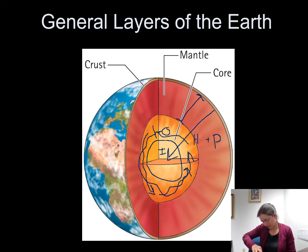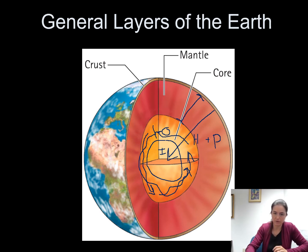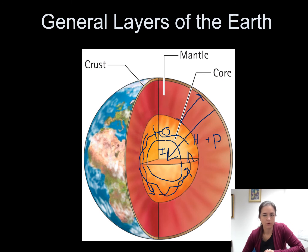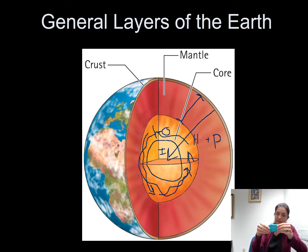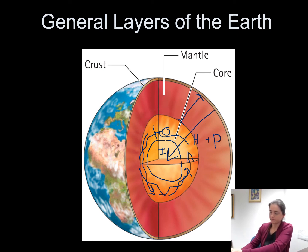The mantle flows kind of like Play-Doh, where it is a solid but it's considered a plastic solid. If you balled up your Play-Doh, set it on the table, and put a textbook on it, it would over time flow. So the mantle flows but it's considered a semi-rigid or plastic solid because it can move, though the flow rate is a lot slower than Play-Doh — about two centimeters per year on average. The mantle is also broken up into upper and lower mantle layers based on its properties.